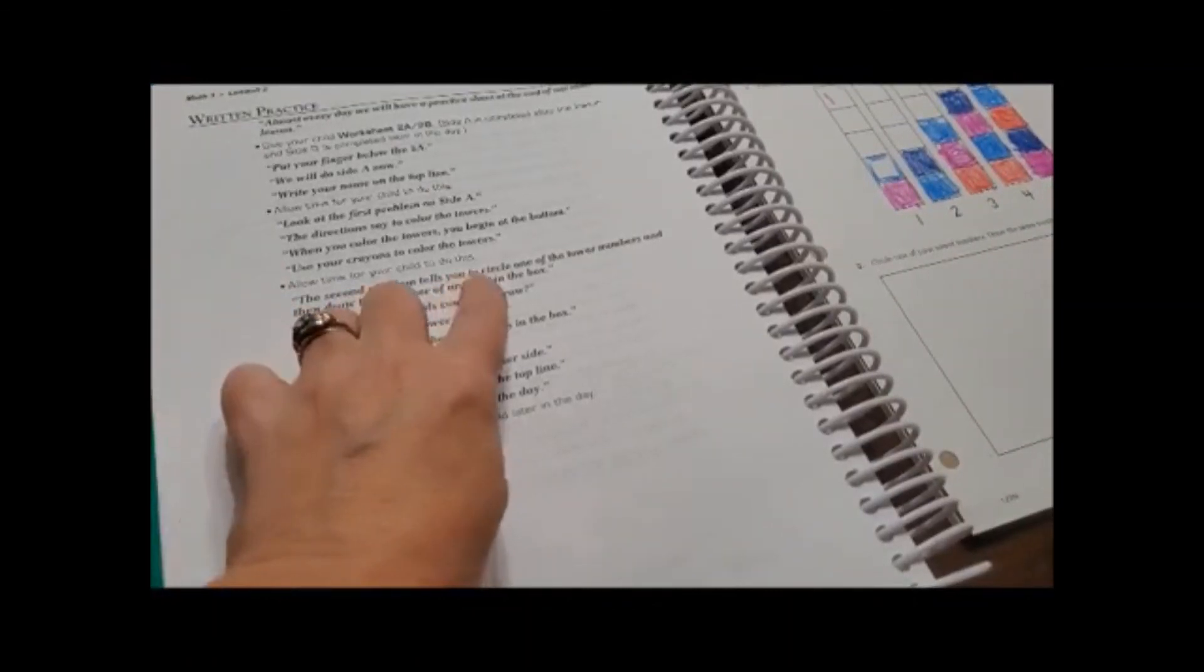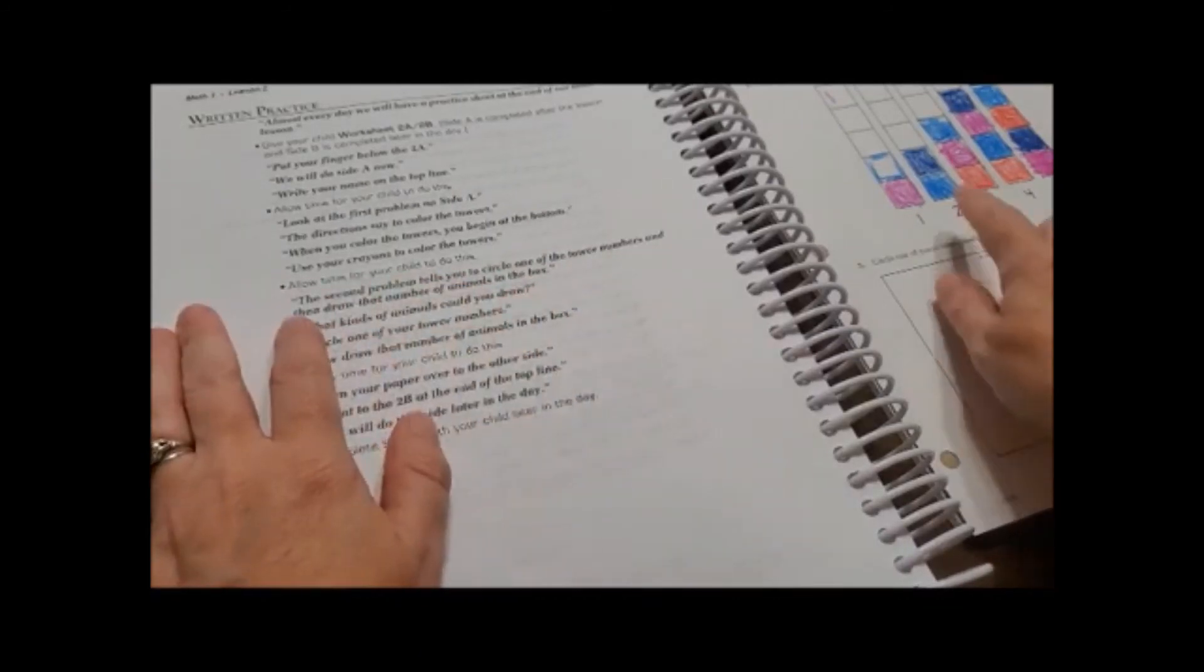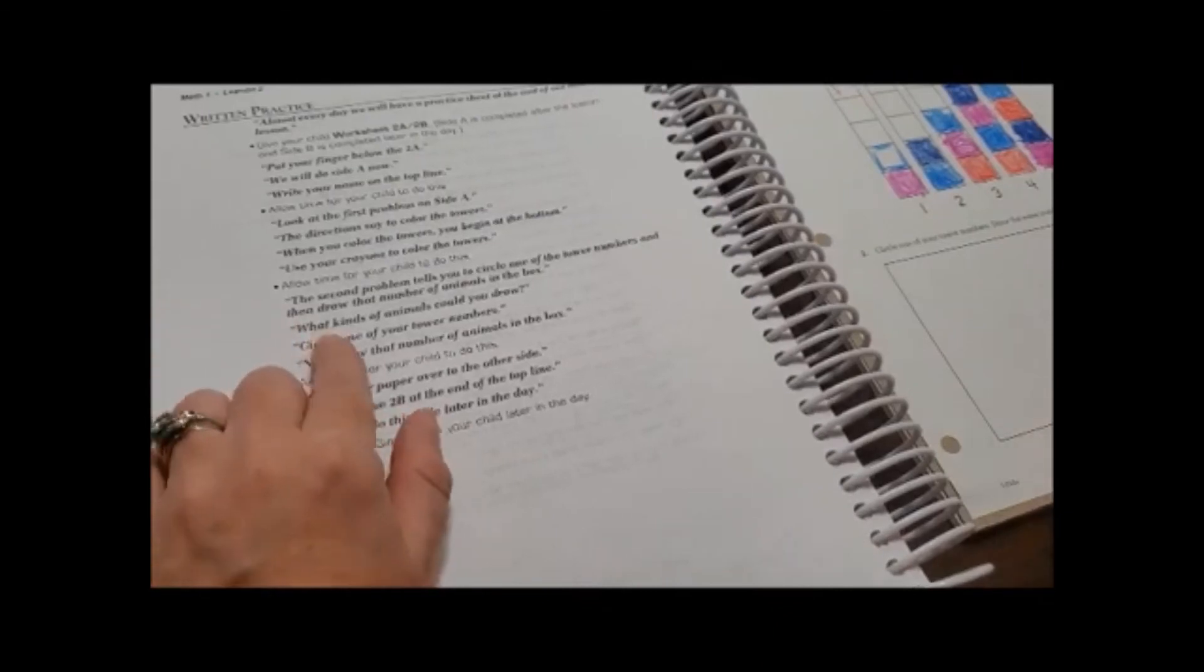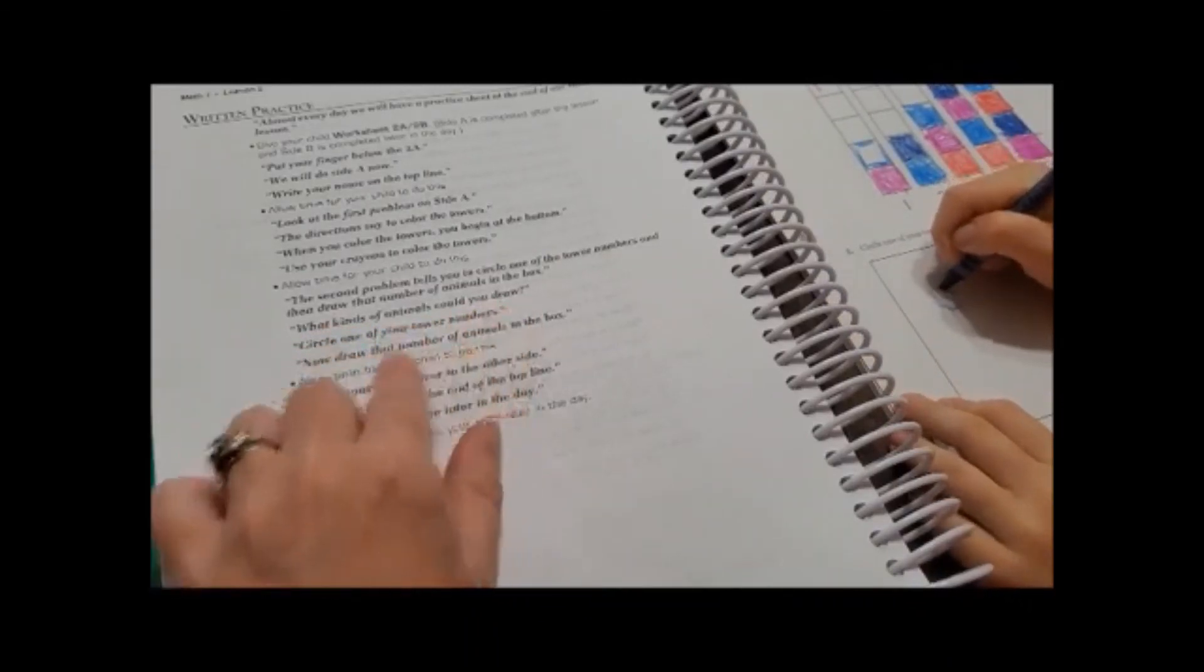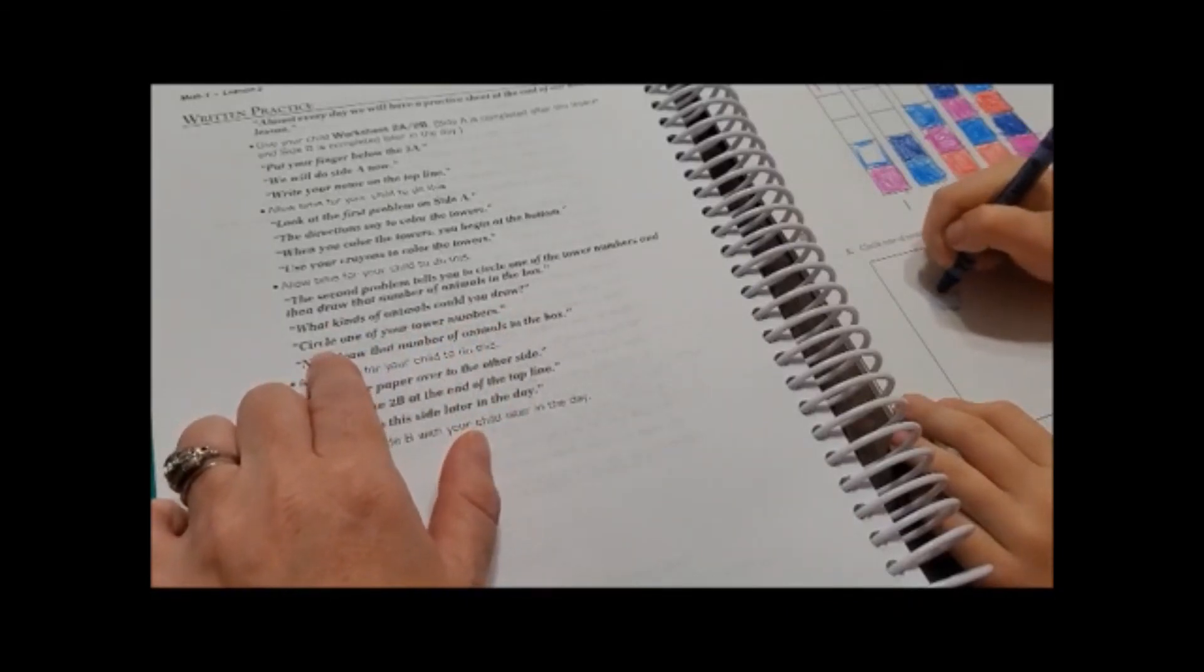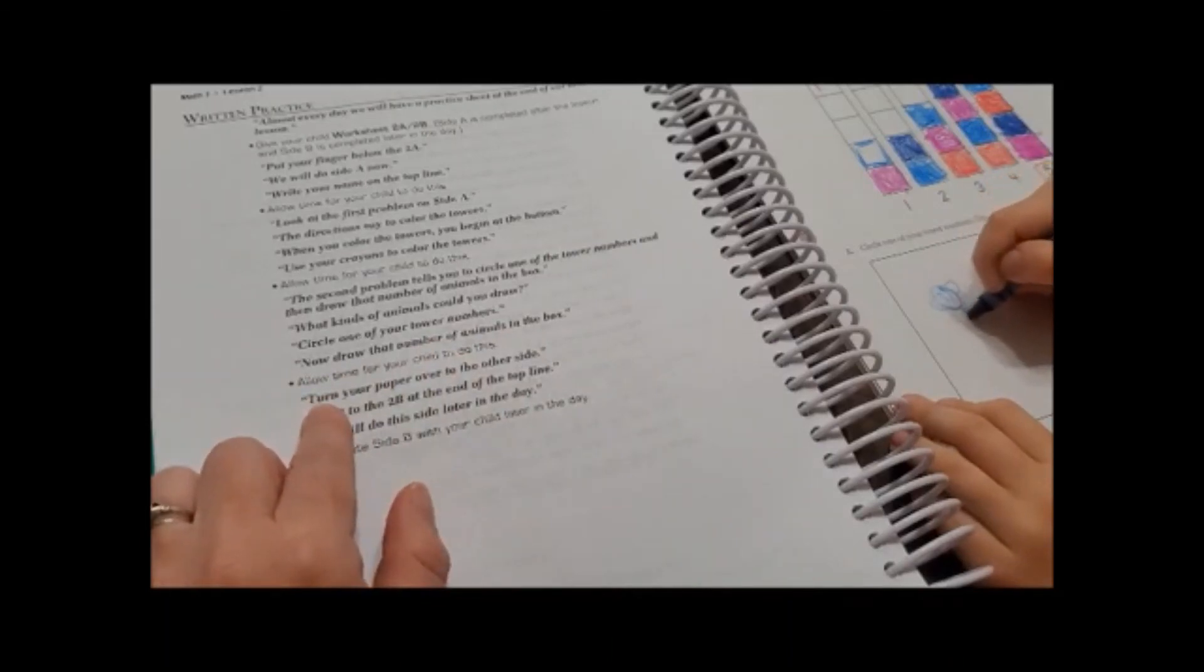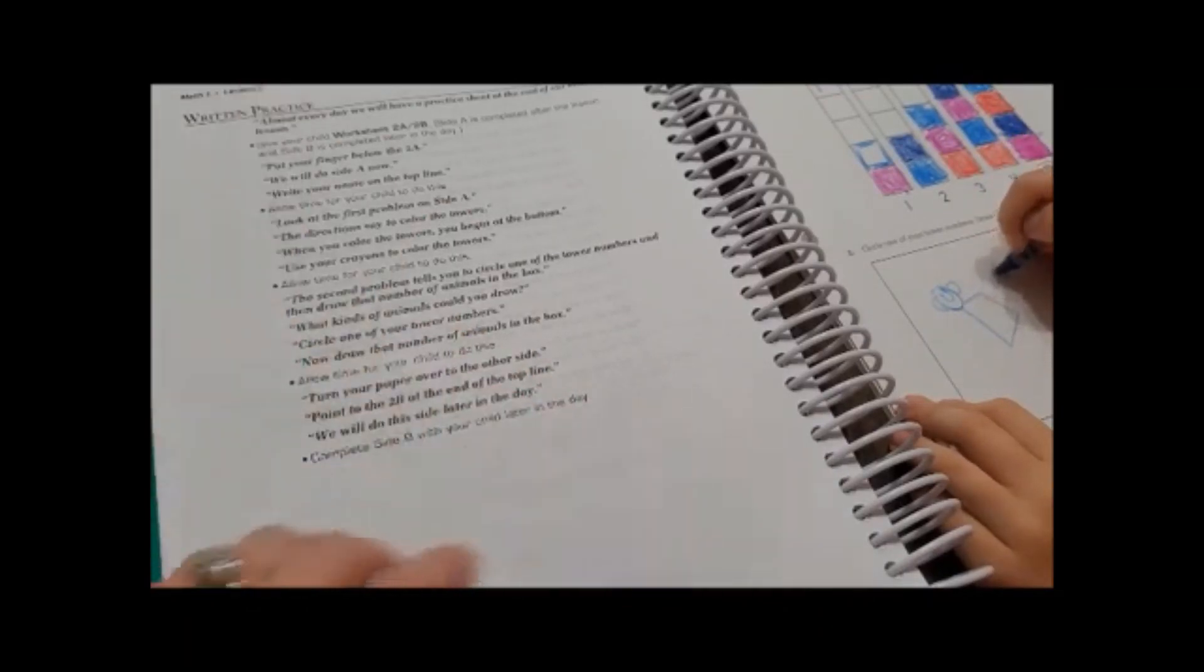Now it says the second problem tells you to circle one of the tower numbers and then draw that number of animals in the box. So circle one, two, three, four, five. Which number you want to circle? Five. It says circle one of your tower numbers. Draw the same number of animals. What animal are you going to draw? I think I'm going to try and draw a monkey. Monkey, alright. So it says right here, what kind of animal are you going to draw? She's going to draw a monkey. So now we're going to draw that many animals in that box. And then over here, while she's drawing, it says turn your paper over to the other side and do B. Well we're not doing B because she's got this, so we're going to let her draw her five monkeys. But I hope you have enjoyed this do a lesson with us for Saxon math level one.